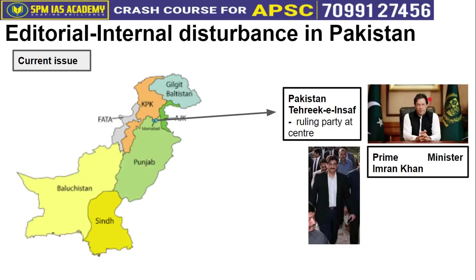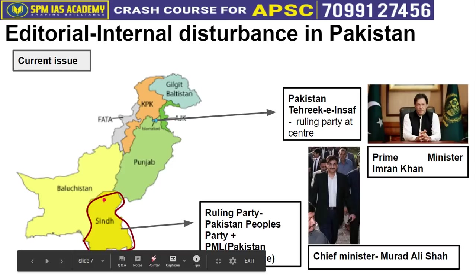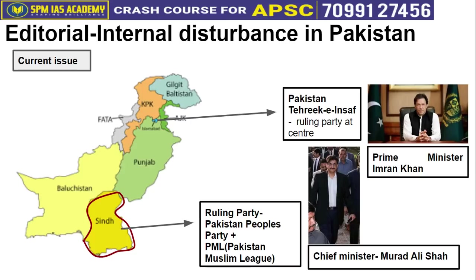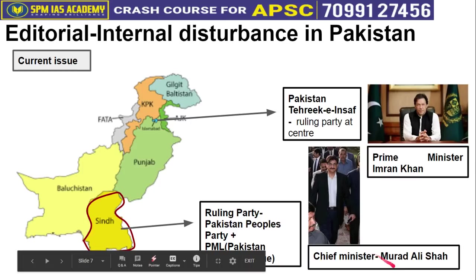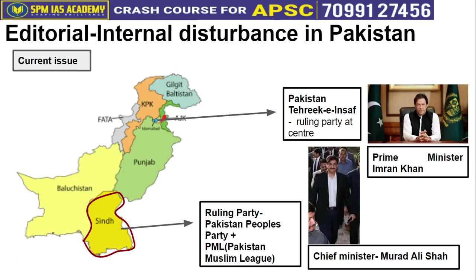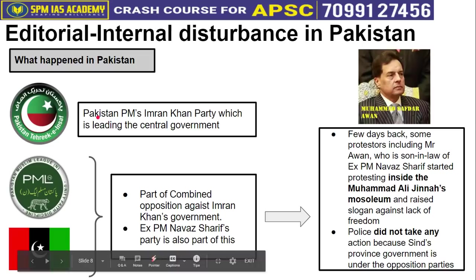In Sindh province, a coalition government has been formed by two parties: Pakistan People's Party (PPP) and Pakistan Muslim League (PML). The Chief Minister there is Murad Ali Shah. So in short, the central government belongs to one party, while Sindh province's government belongs to two different parties — Tehreek-e-Insaf at center under Imran Khan, and PML and PPP at the state level.